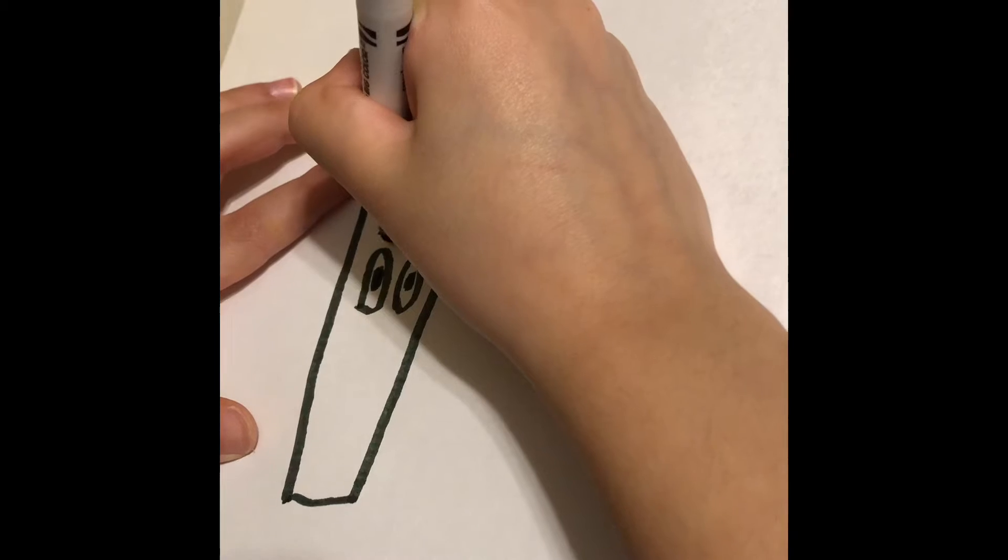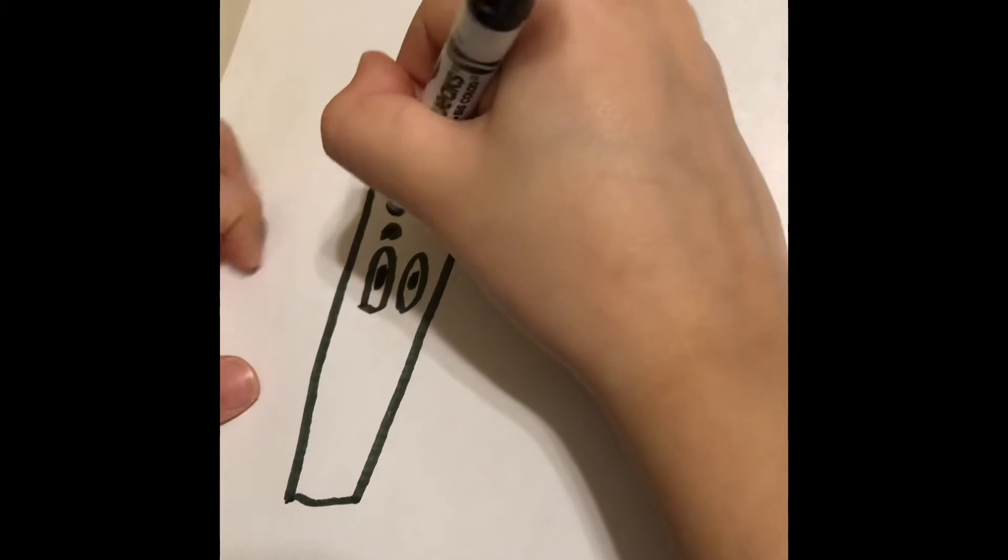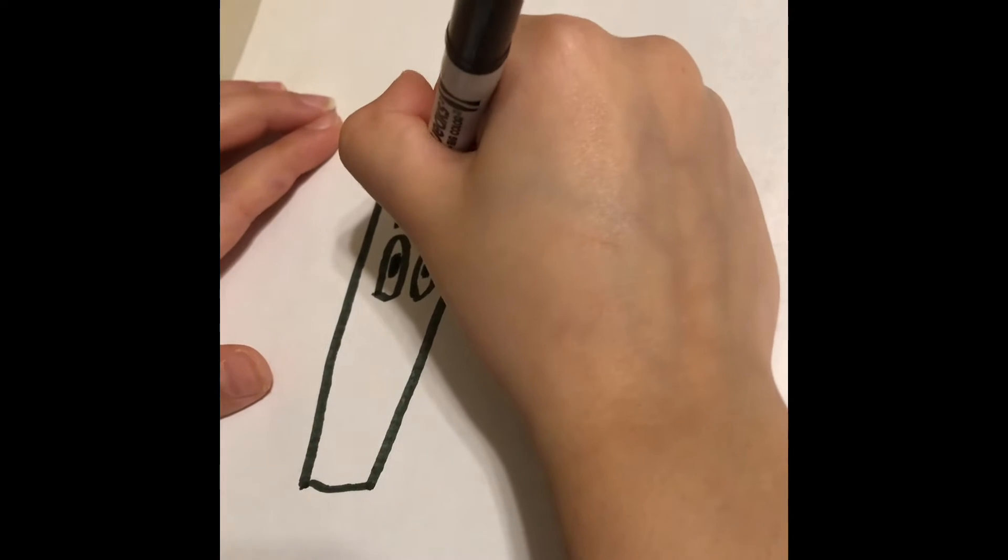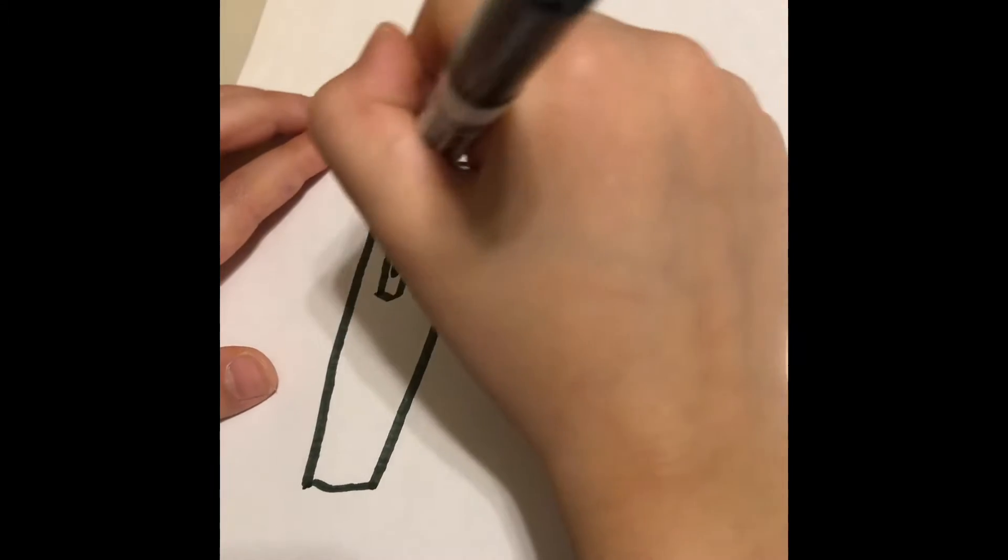Now let's do the eyebrow. Just do the curve shape, then you color it in, and then you do the same thing.